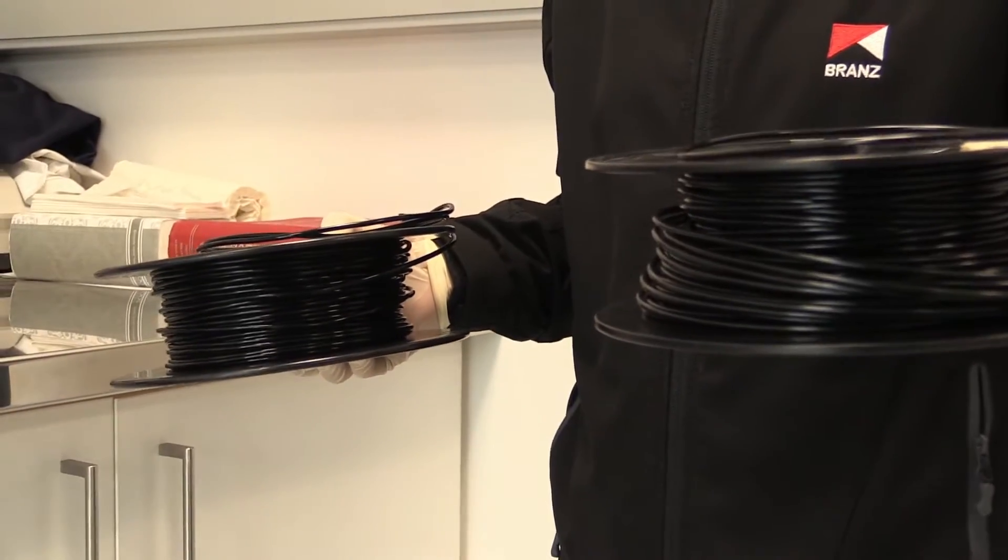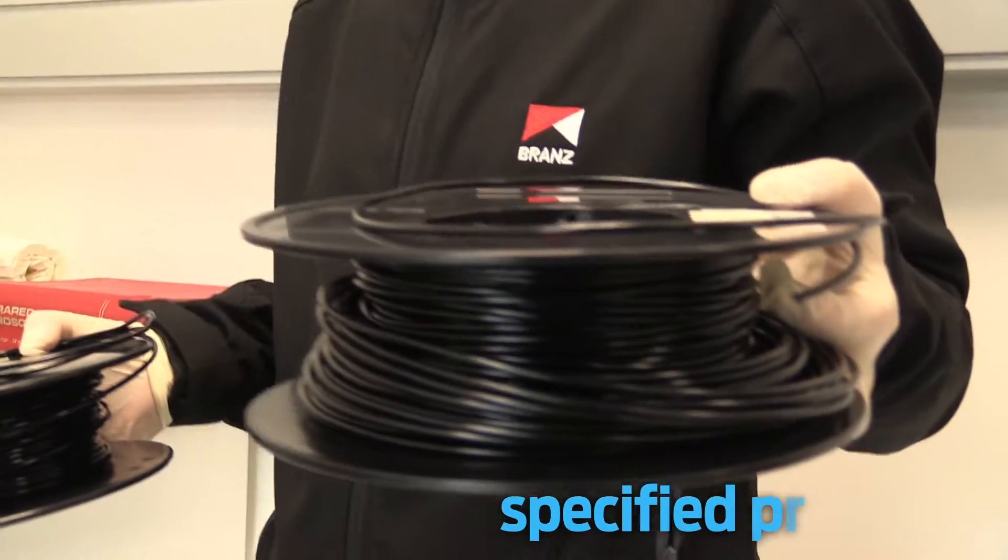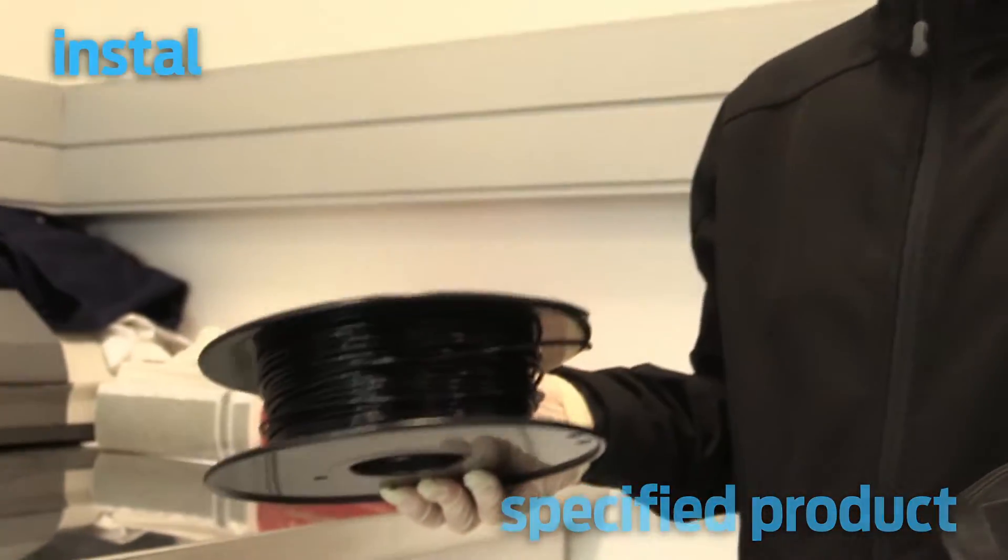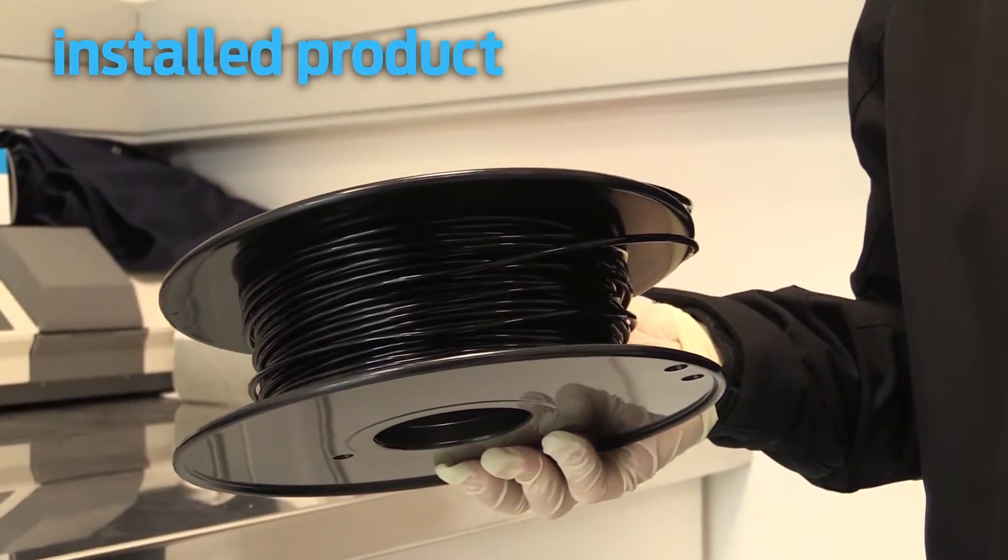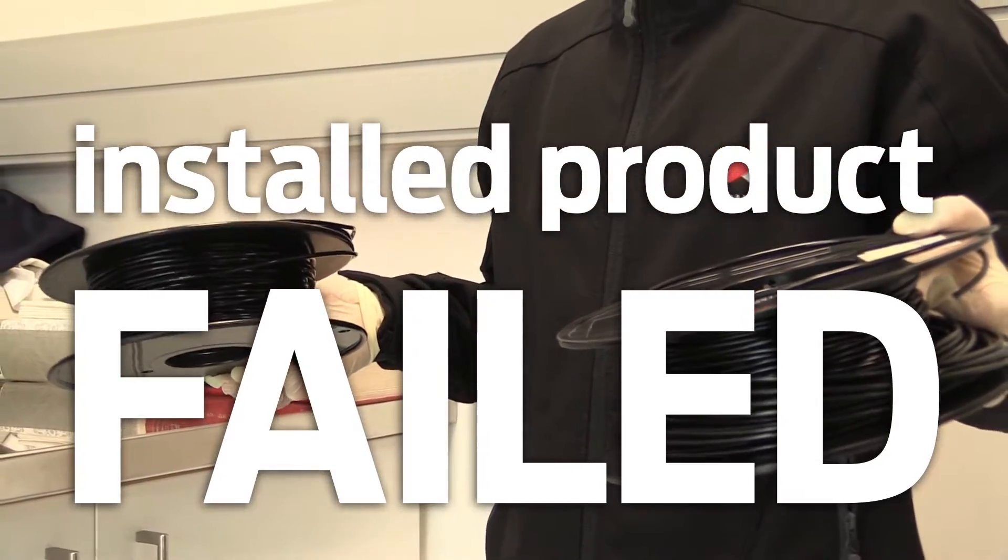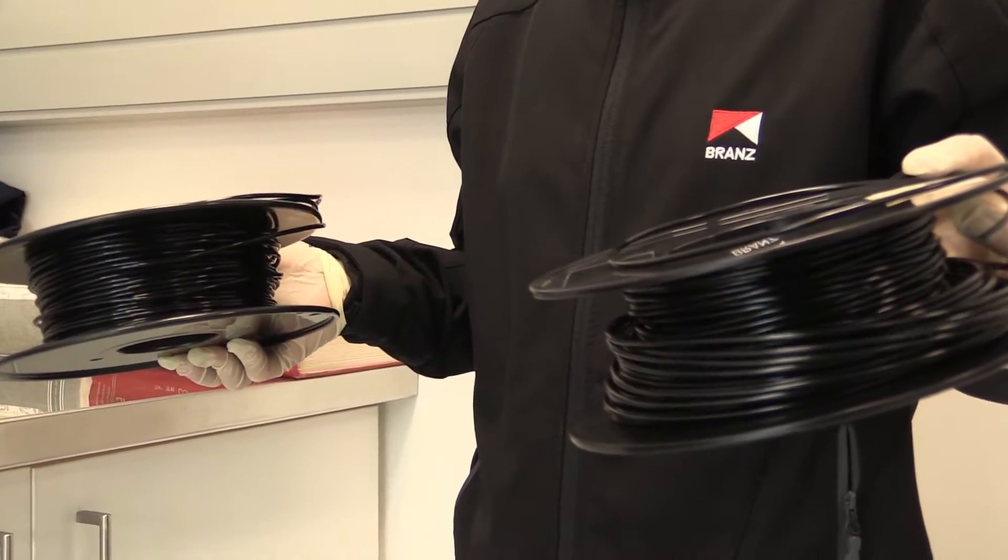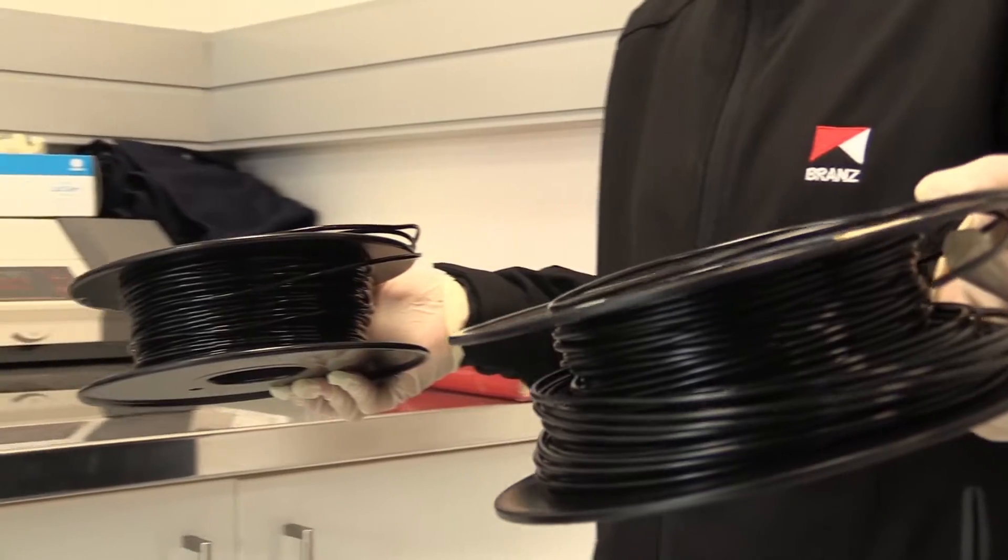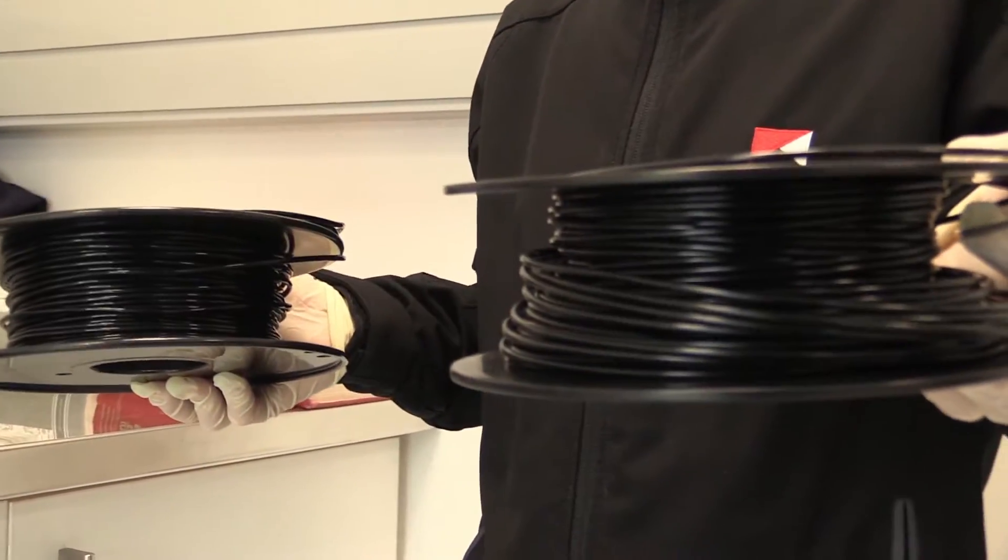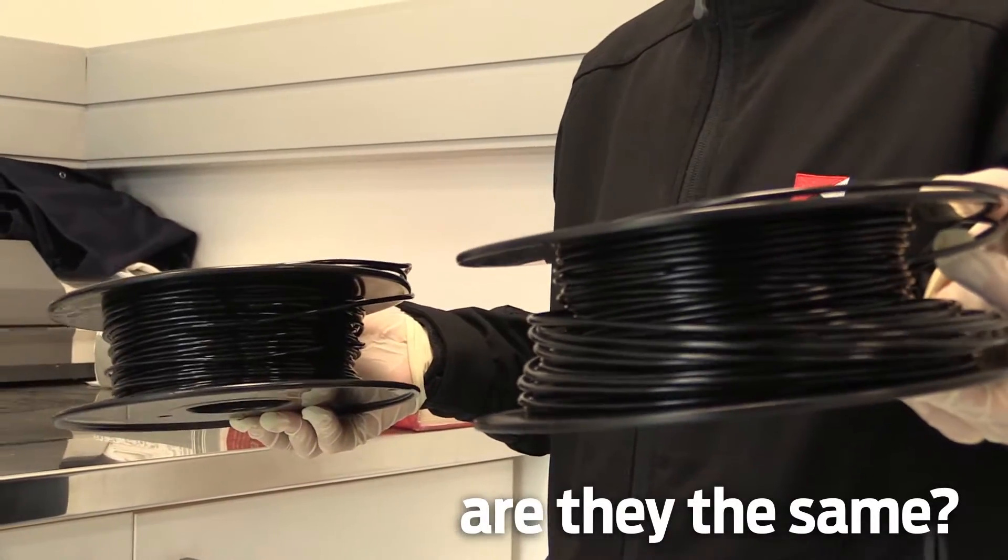Here we have two black polymers which look virtually identical. This product was specified during the build whereas this product was the product that was actually installed. The installed product failed much earlier than anticipated, which led the manufacturer to be concerned that product substitution had occurred. So we can look at both of these and actually find out chemically whether they are the same or not.